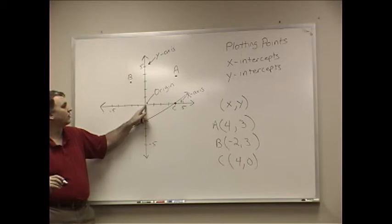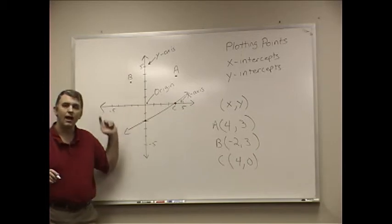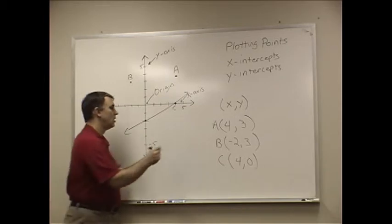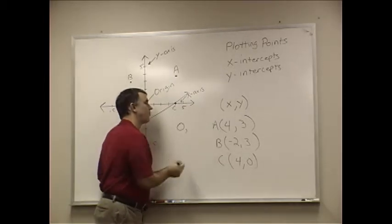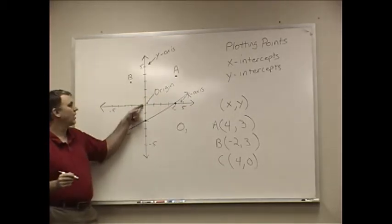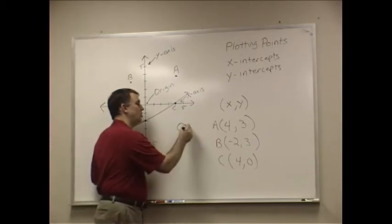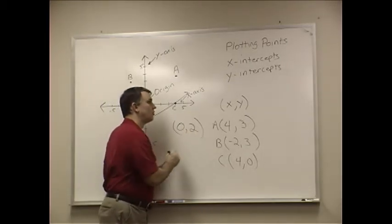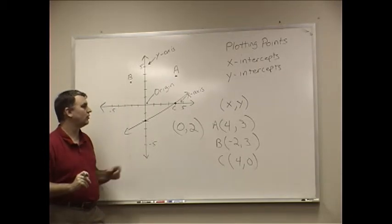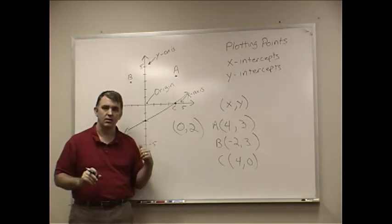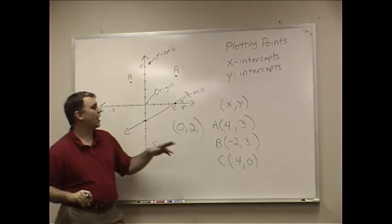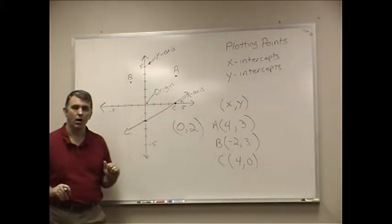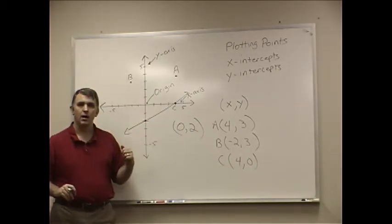And if you look here, as far as the y-axis goes, you're not going to the left or the right, are you? So, you would be going over 0. In this case, you'd be going down 2. So, your y-intercept would be 0, 2 on this line. So, intercepts will always have a 0 as part of the ordered pair.